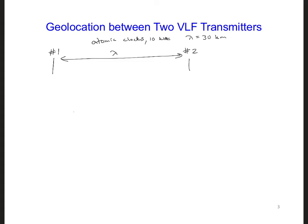Let's say there's a ship at a port at station number one. At station number one, the signals from station one and station two are in phase because there are an integer number of wavelengths between the two stations. When the ship is docked at station number one, the two signals are in phase.